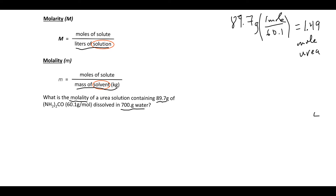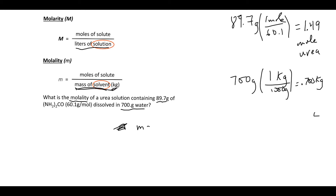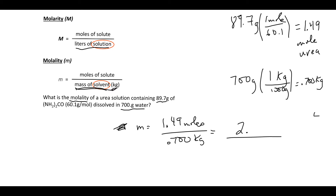The only other piece needed is mass of solvent in kilograms: 700 g / 1000 = 0.700 kg. Molality (lowercase m) = 1.49 mol / 0.700 kg = 2.13 molal.